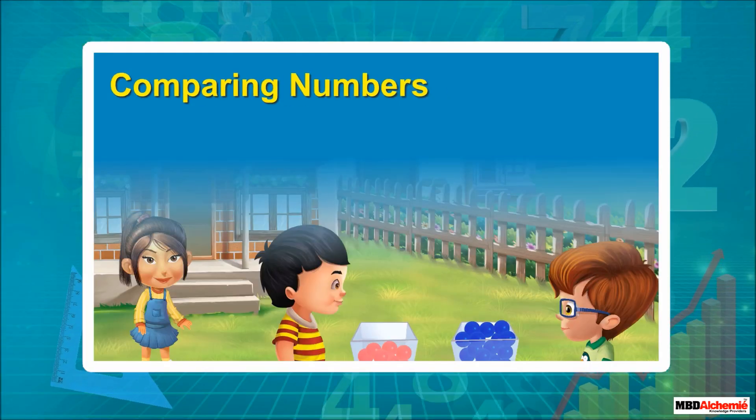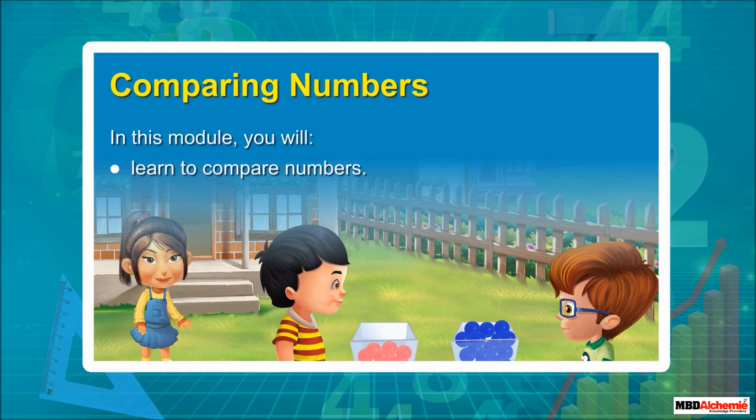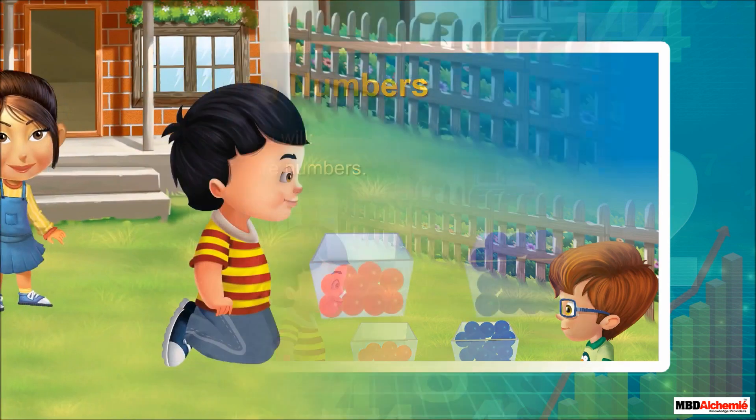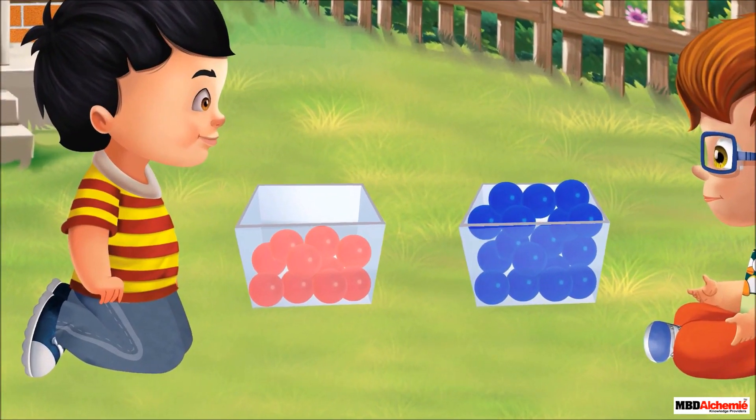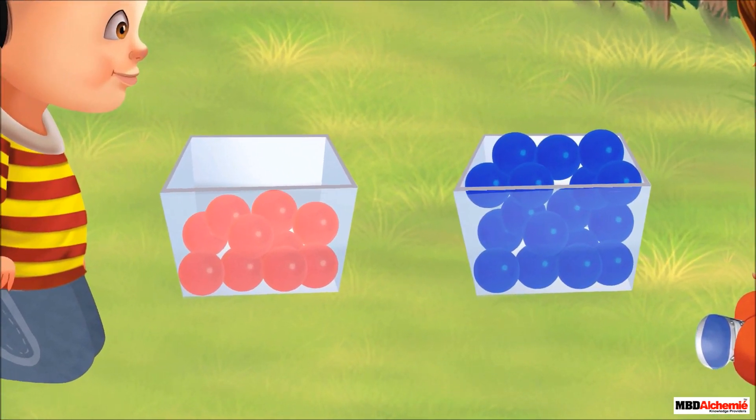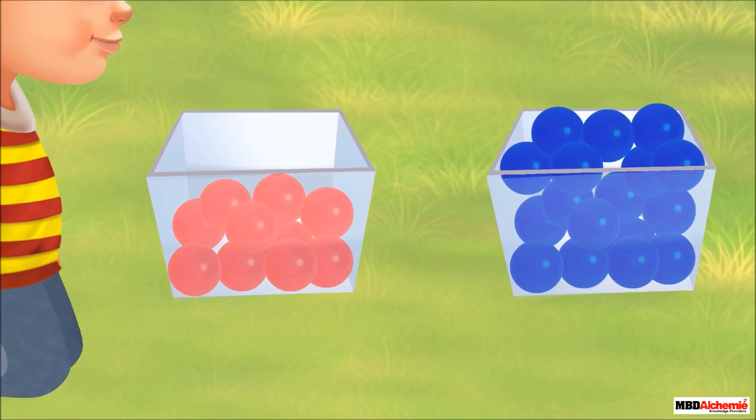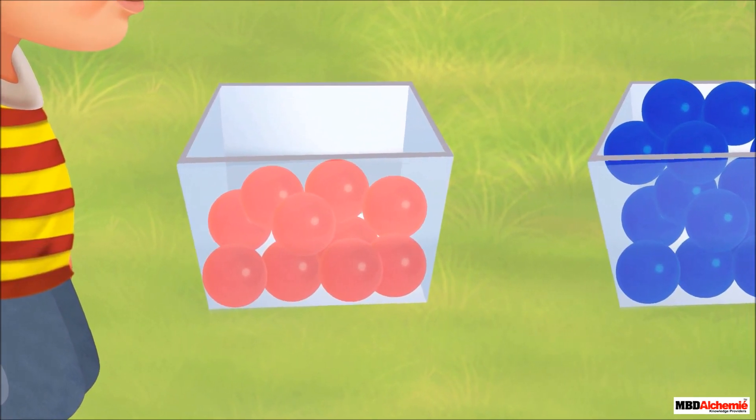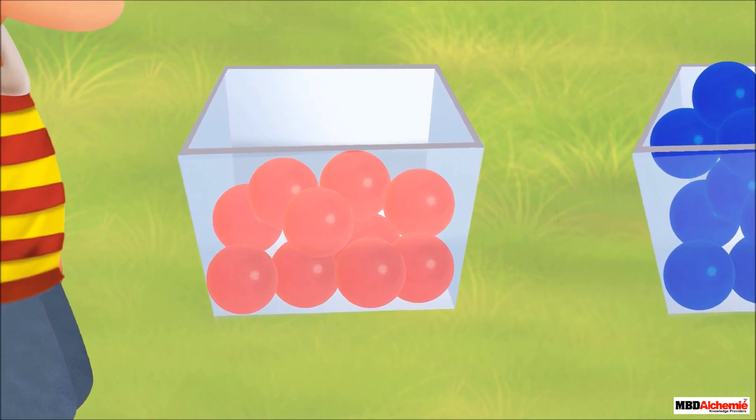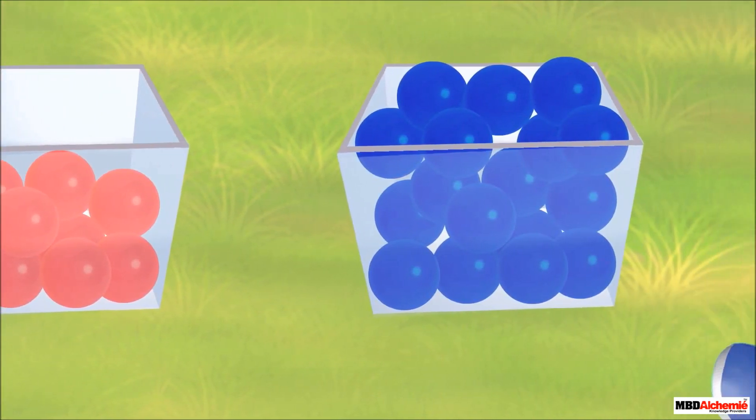Comparing numbers. In this module you will learn to compare numbers. Sid and Neil are in a garden. They have a few colored balls in their boxes. Sid has 10 red balls in his box and Neil has 17 blue balls in his box.